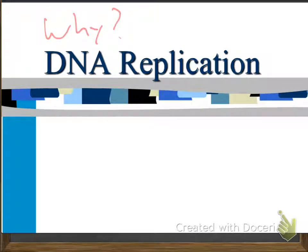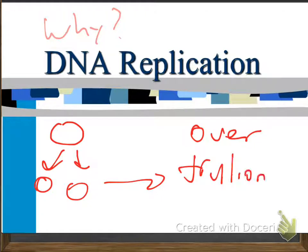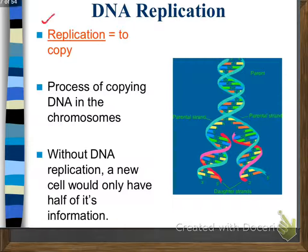Well, if you remember, we start off as one cell, and we begin to divide and divide and divide, all the way to where we have over a trillion cells that make us up now. In order to make sure that we have a continuity of DNA, DNA needs to be replicated time and time again. Basically, it just means to copy.